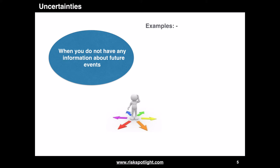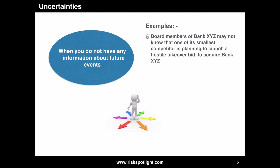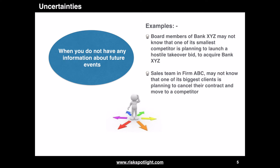Let's cover the first type with an example. Board members of Bank XYZ may not know that one of its smallest competitors is planning to cancel their contract and move to a competitor. Both of these examples relate to situations where we may be completely unaware of future events. For our risk management programs to be effective we should try to minimize such uncertainties. As per ISO 31000, this can be done by performing a detailed analysis of the internal and external context.